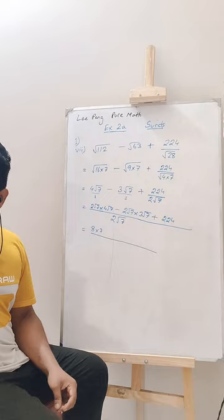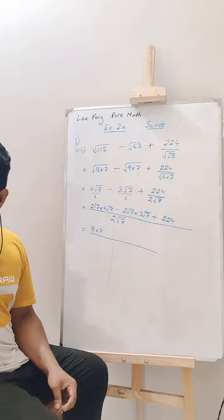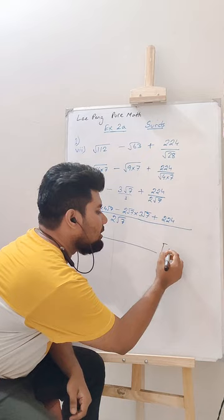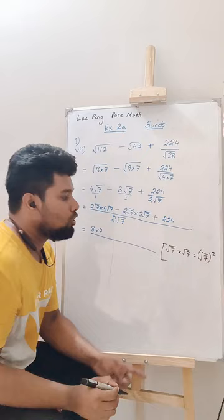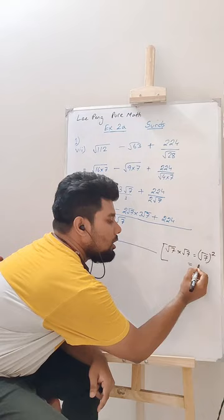And we also showed you in the previous video, still I am writing it again here. If it is root over 7 times root over 7, same thing I am multiplying, I can write the square of the same thing: root over 7 whole square. And this square and this root gets cancelled where I will only be left with 7, and this is true for any whole number.